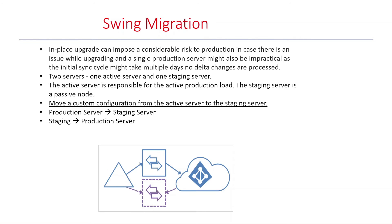Swing Migration requires at least two servers: one active server and one staging server. The active server, shown with solid blue lines in the diagram, is responsible for the active production load. The staging server, shown with dashed purple lines, is a passive node with the same configuration as the active node but is not running export cycles. The staging server is installed with a new release configuration as part of the upgrade process.